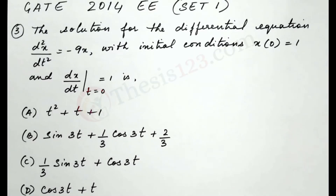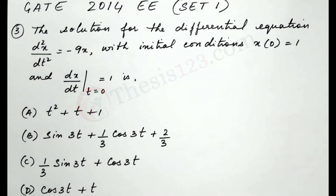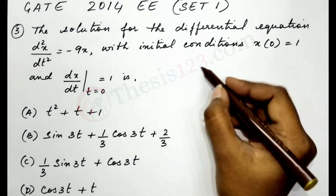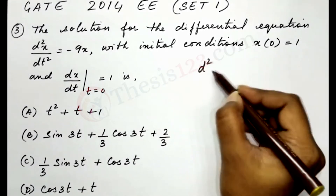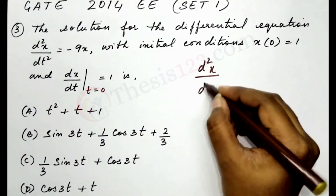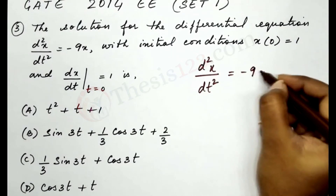Here's question number 3. It reads: the solution for the differential equation d²x/dt² = -9x with initial conditions x(0) = 1 and dx/dt at t = 0 equals 1. We have four options given and we need to find the solution of the differential equation. Let's start by writing down the equation: d²x/dt² = -9x.